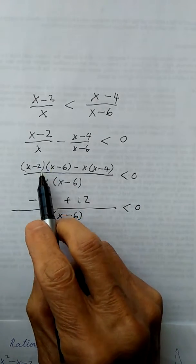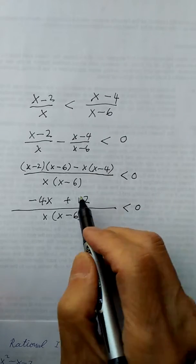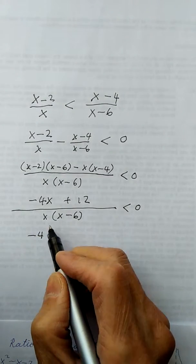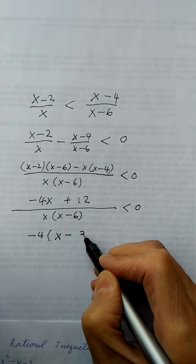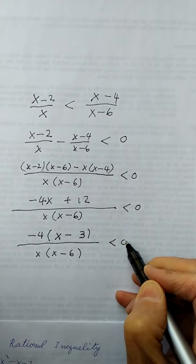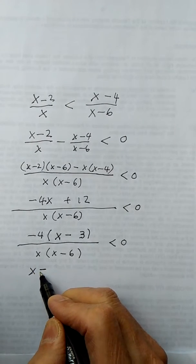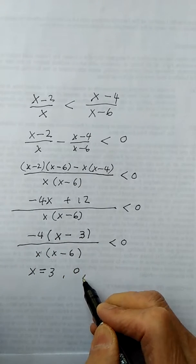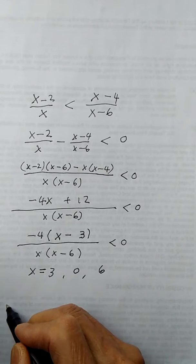The numerator simplifies to negative 4x plus 12. You can factor out negative 4 from the numerator to get negative 4 times (x minus 3). Then it's routine: write down the zeros. From (x minus 3), x equals 3. From the denominator factor x, x equals 0. And from (x minus 6), x equals 6. So I have three zeros and I draw a number line with 0, 3, and 6.